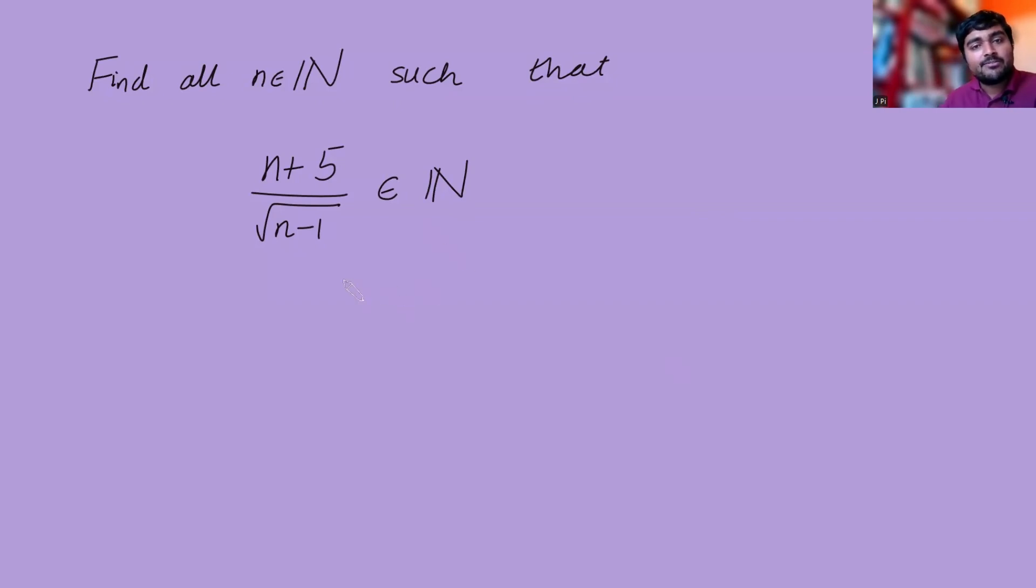So what we're going to do is first notice that since n is a positive integer, so is n plus 5. So this numerator is also an integer. And since we want this whole thing to be an integer, in particular rational, we need this bottom guy to be a rational number. So root n minus 1 is a rational number.